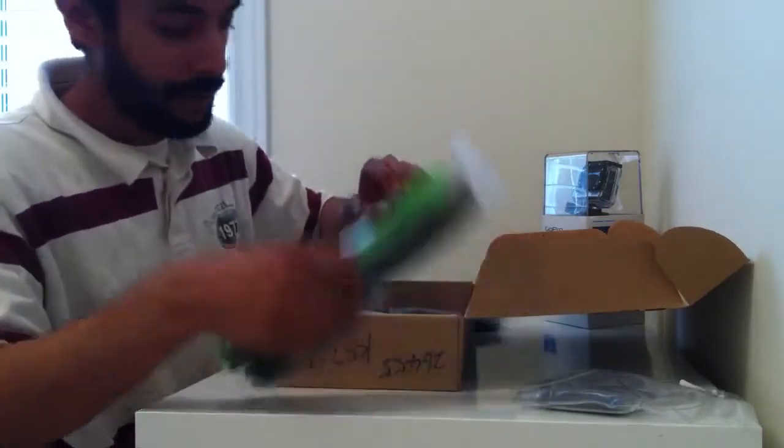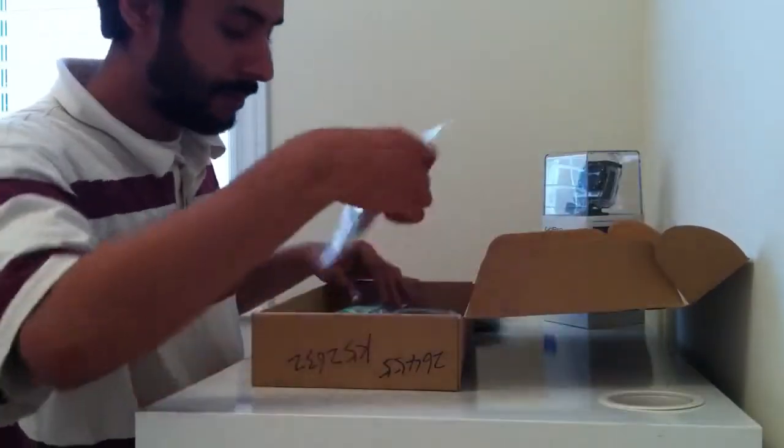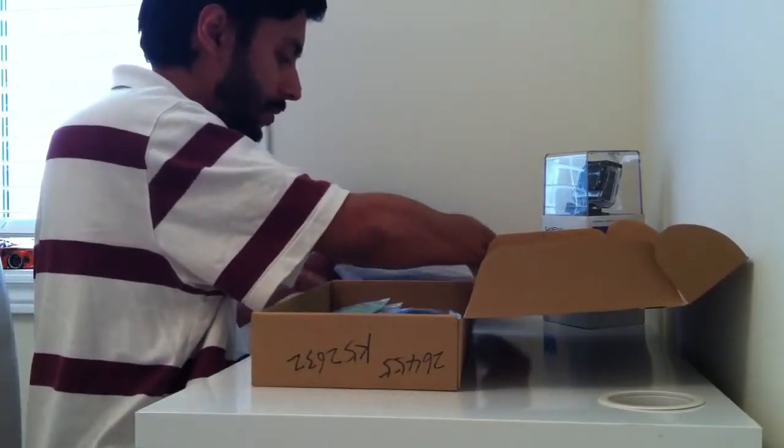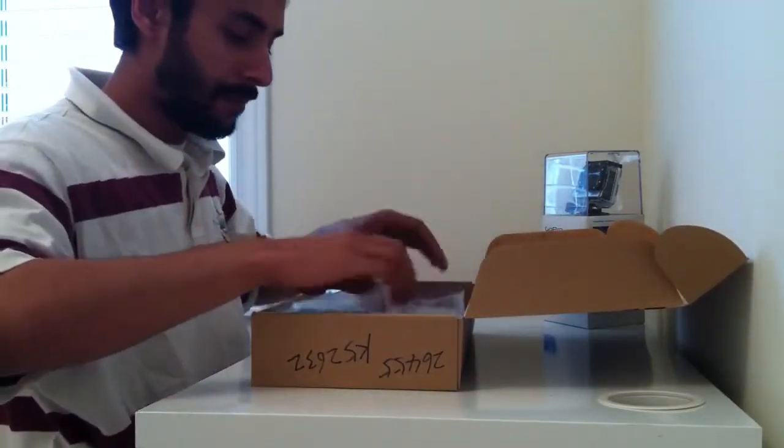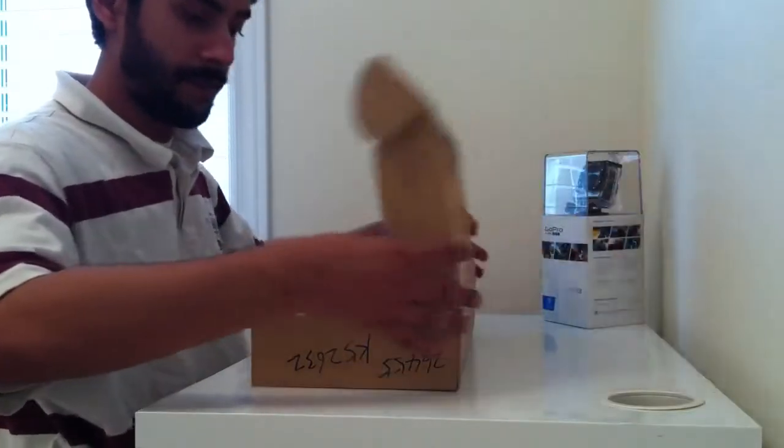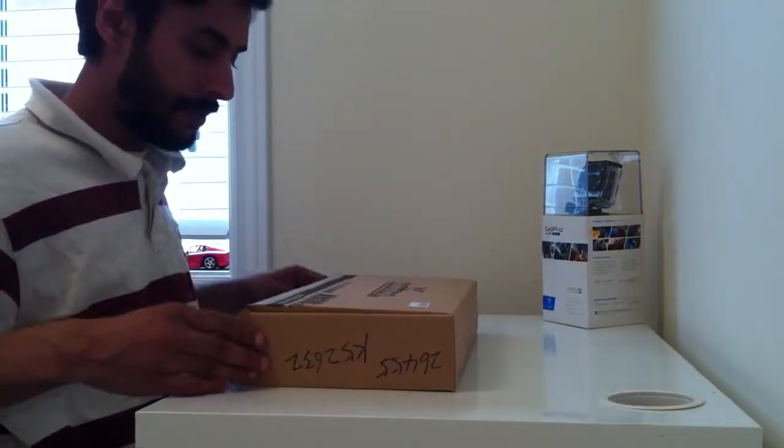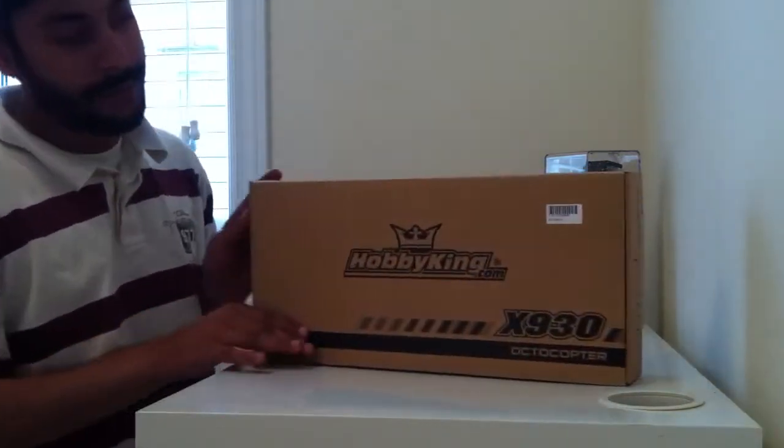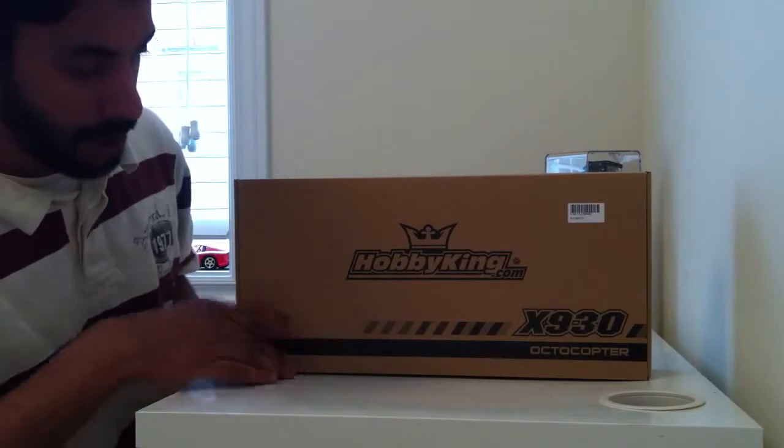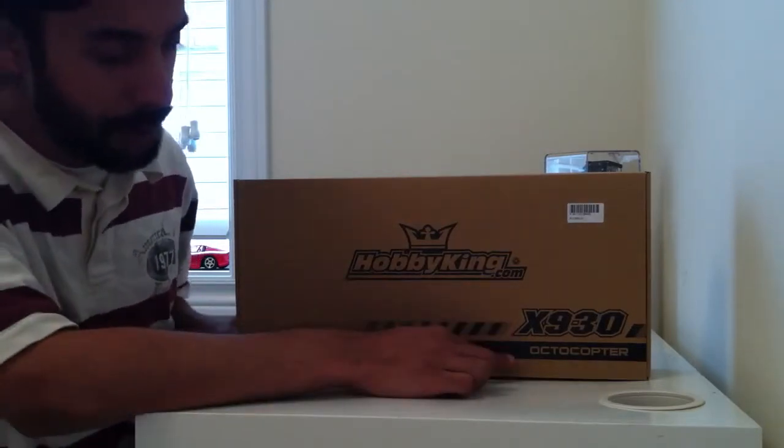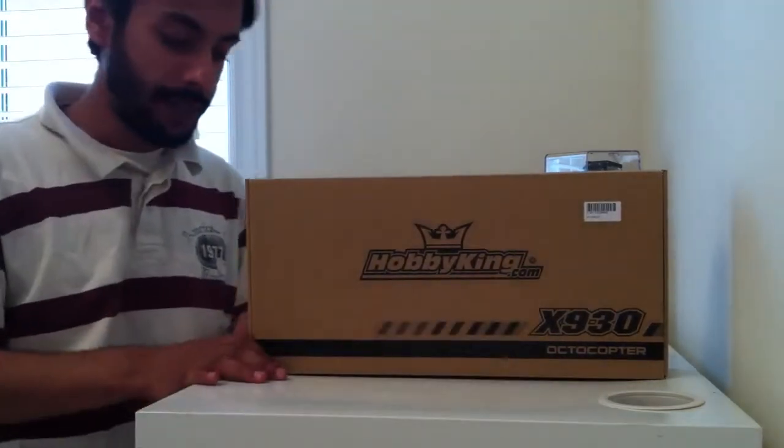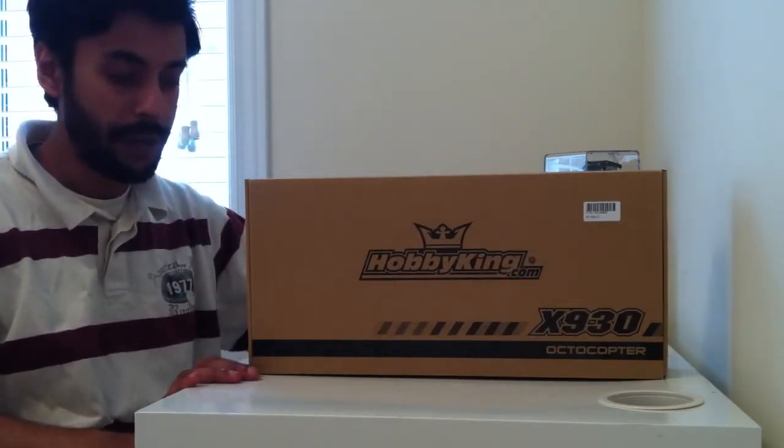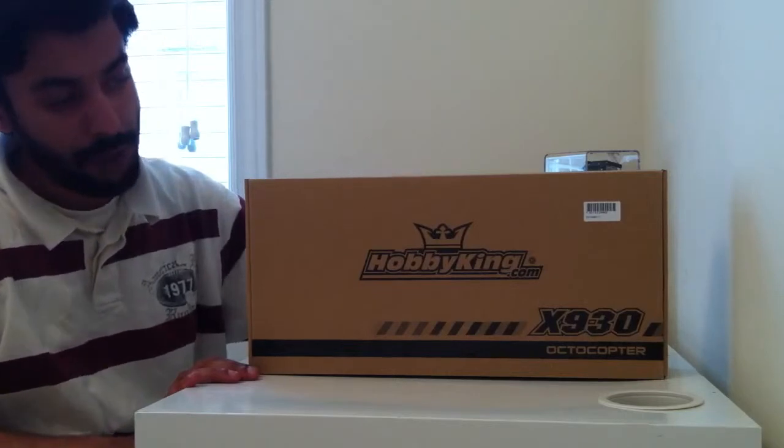So let's put everything back in the box. In this video, we unboxed the HobbyKing X930 Octocopter. I hope to get going on this build very soon. I have some other projects going, so as soon as they're out of the way, we can get started in the next video. I hope you enjoyed the build tutorial for this.